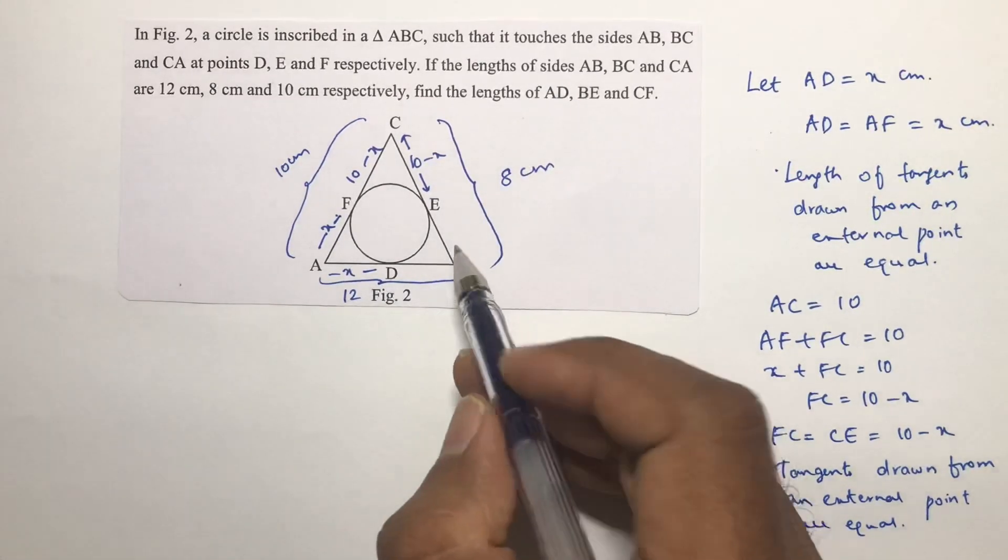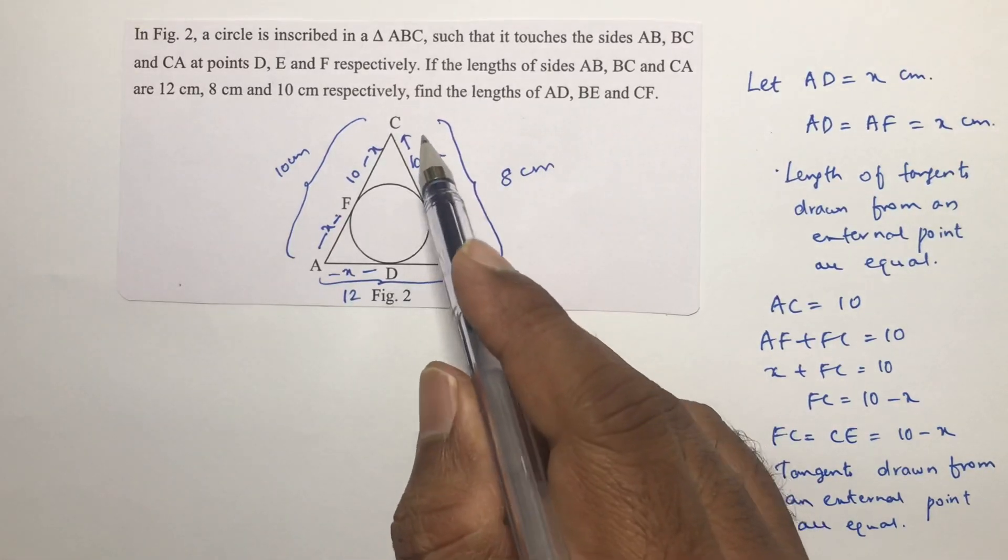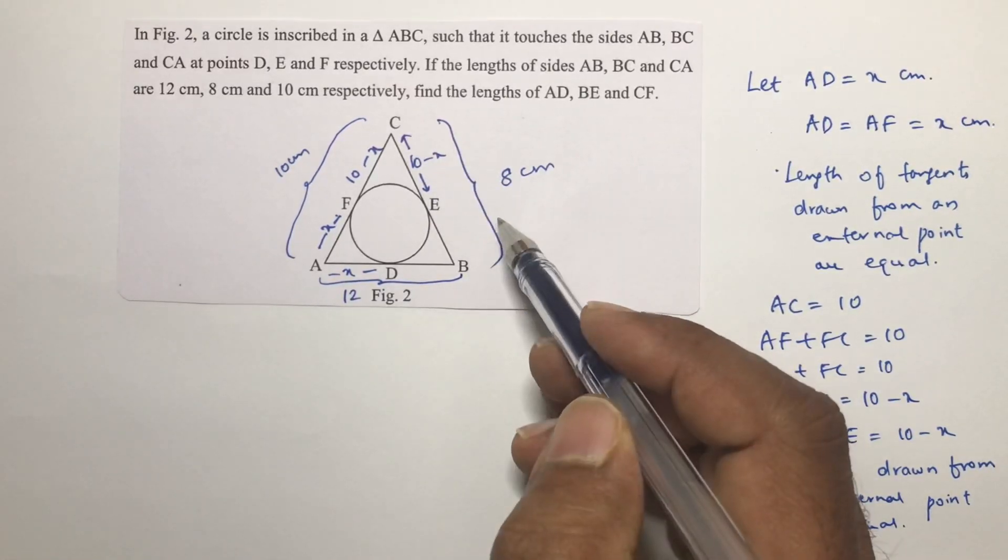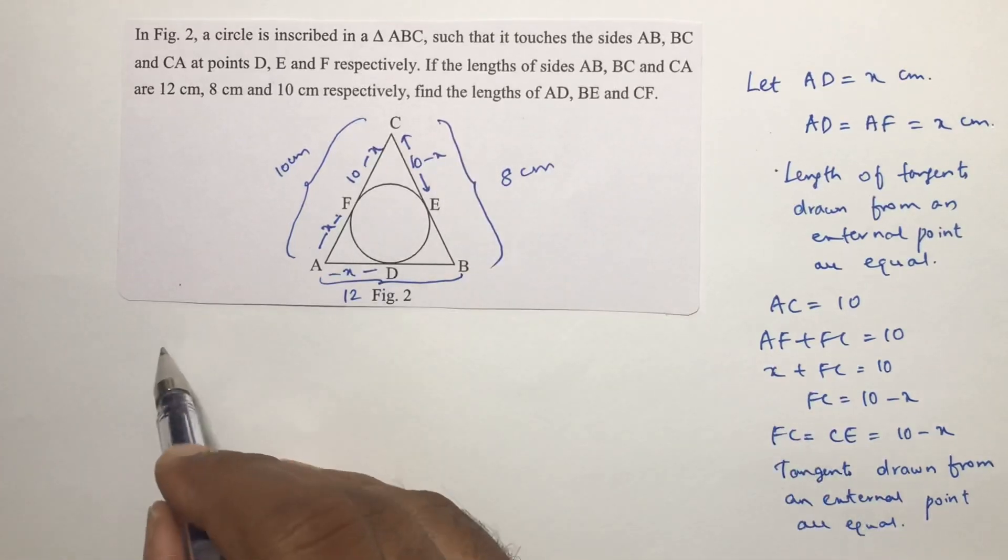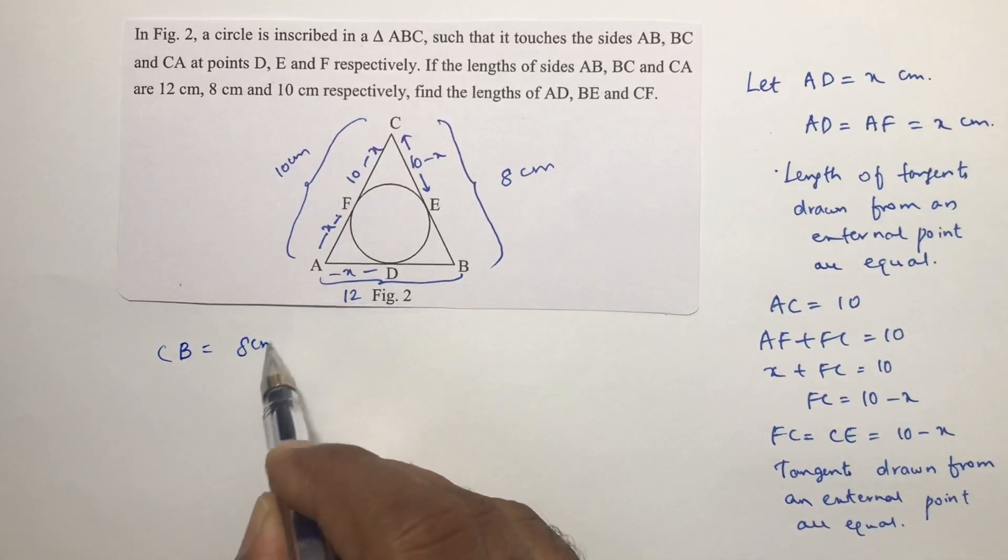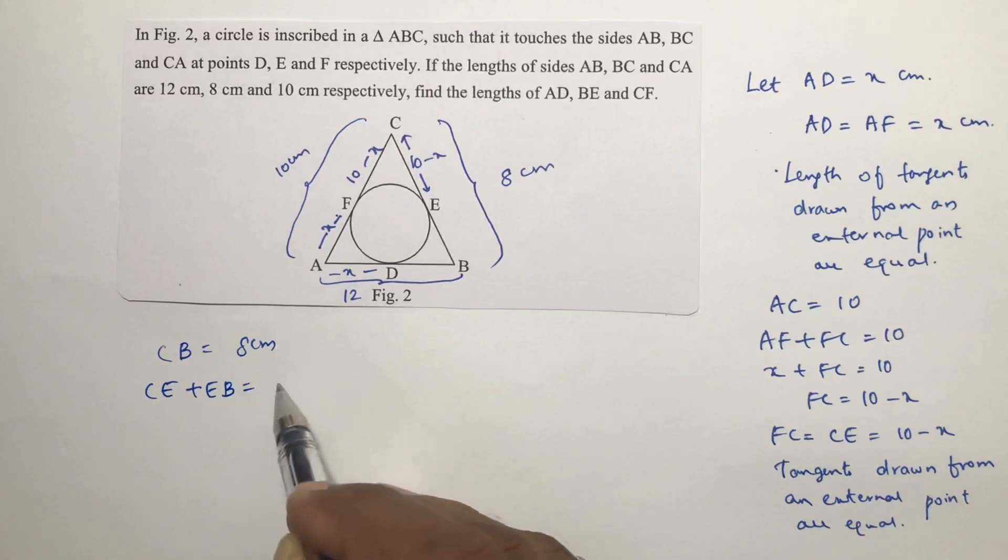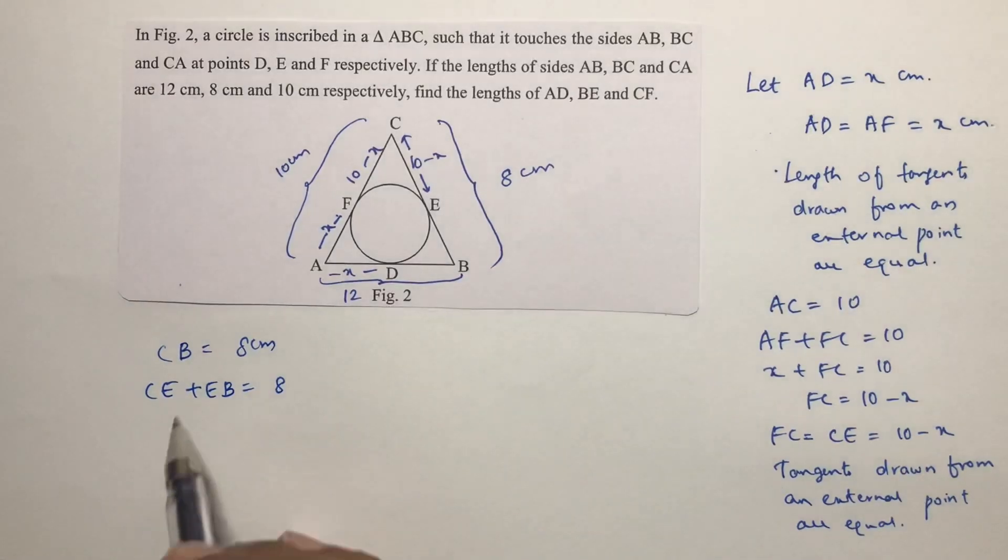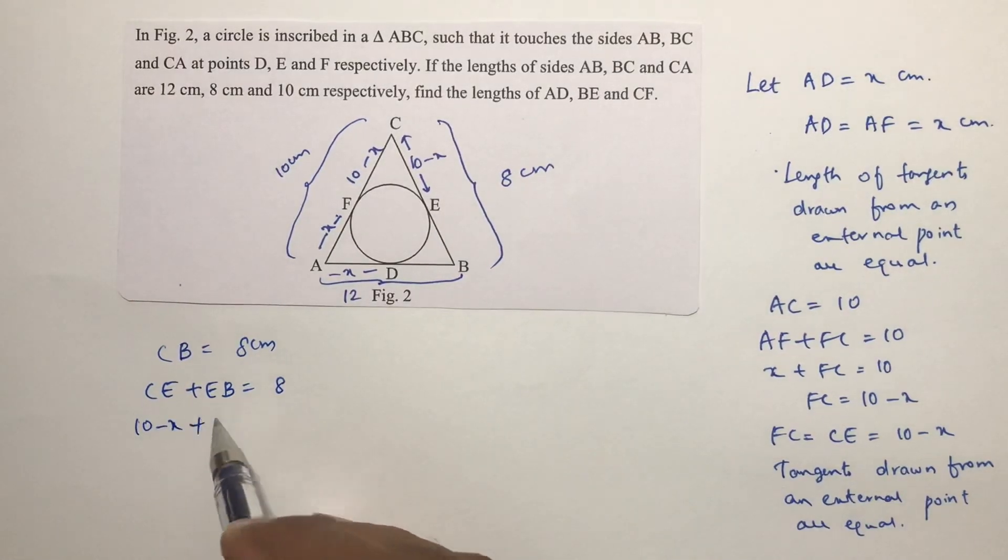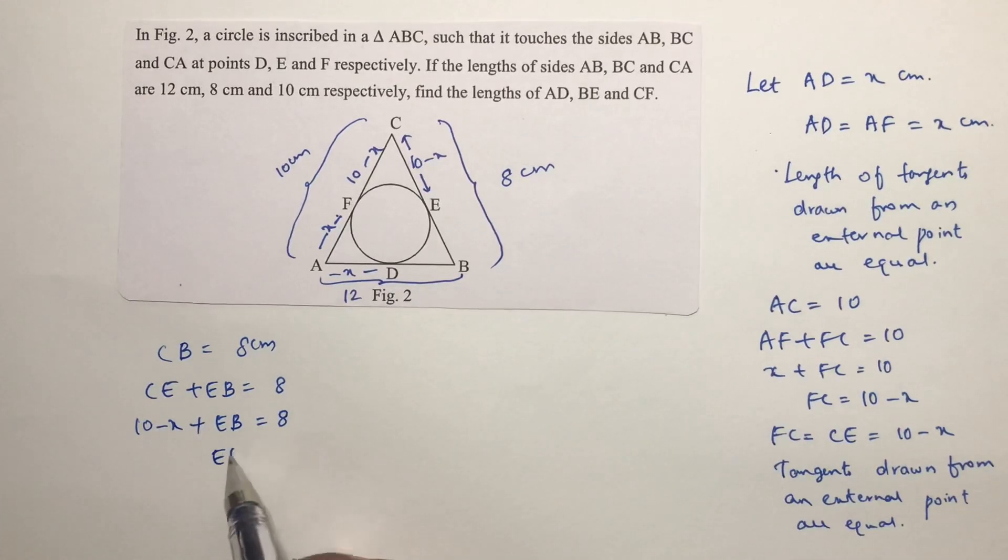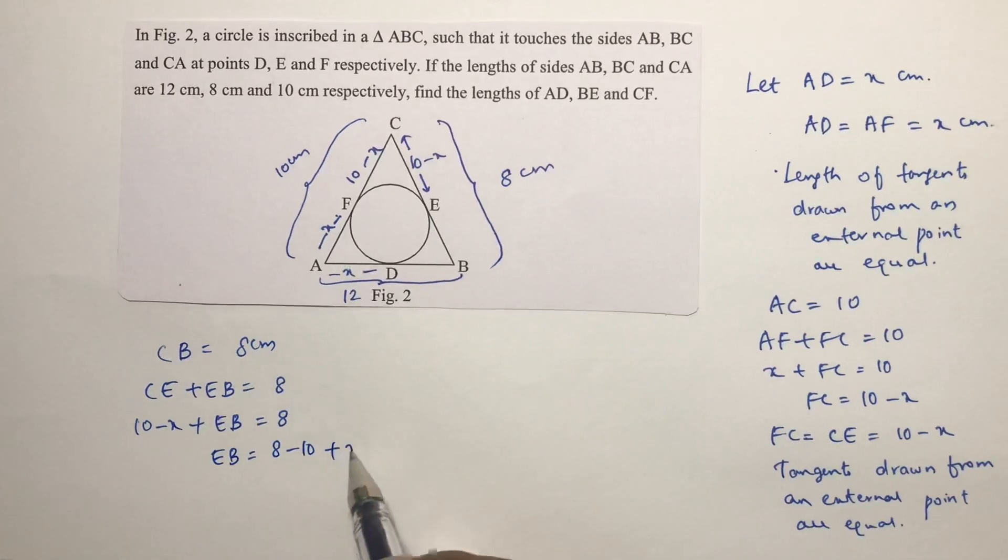But now see if total CB is 8 centimeters, but CB is CE plus EB equals 8 centimeters. CE already I got here 10 minus x plus EB equals 8. So EB value will be 8 minus 10 plus x, so this value will be x minus 2.